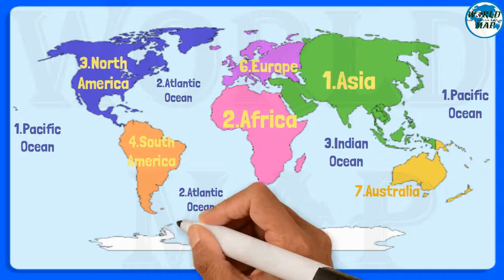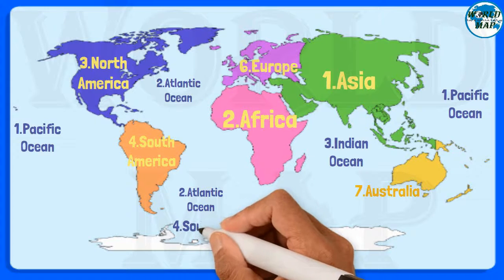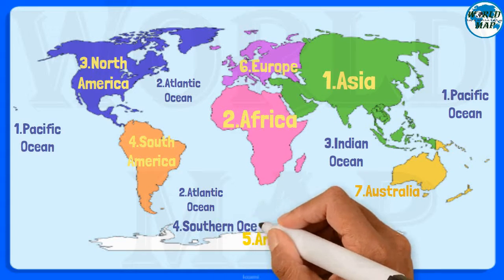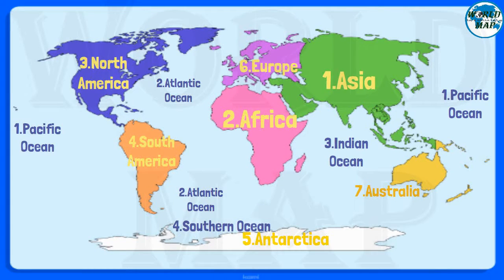Number 4: Southern Ocean. In 2000, the Southern Ocean became the newest ocean recognized by the International Hydrographic Organization. It borders Antarctica in its entirety.